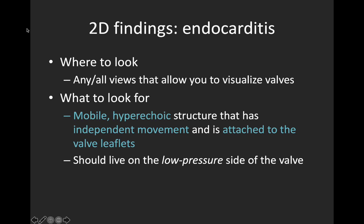The first clinical scenario is the patient with suspected endocarditis. You're going to look in any and all available views to visualize the valves, and what you're looking for is a mobile hyperechoic structure with independent movement that is attached to the valve leaflets. Importantly, the vegetation should live on the low-pressure side of the valve — a mitral valve vegetation on the atrial side, and an aortic valve vegetation on the ventricular side.